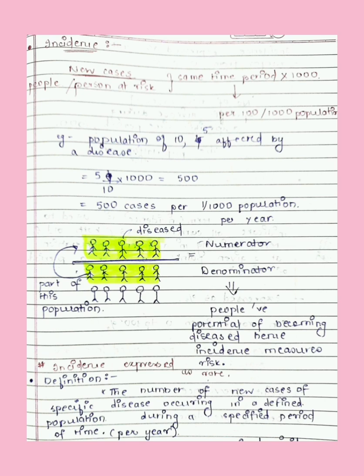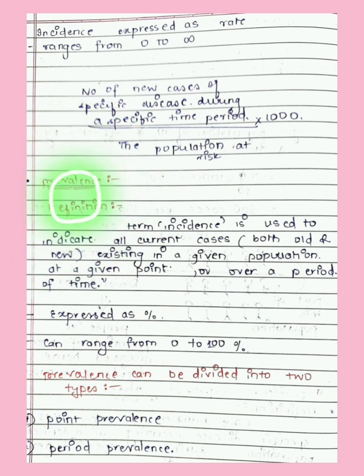Prevalence, by definition, includes all current cases — both old and new — existing in a given population at a given point, which is point prevalence, or over a period of time, which is period prevalence. Prevalence is expressed as a percent, ranging from zero to one hundred percent. Incidence measures risk and is expressed as a rate per thousand population, while prevalence is expressed as a percent.